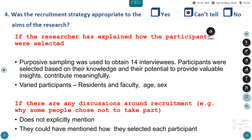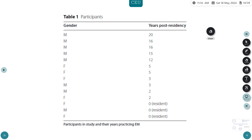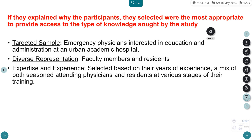There were more males than females, with participants ranging from residents to faculty at various years post-residency. The targeted sample was emergency physicians at a tertiary care academic center interested in education and administration at an urban hospital, representing a diverse mix. They had different expertise levels, from first-year residents to seasoned attending physicians with 20 or more years of experience. If they explain why the participants selected were most appropriate to provide the type of knowledge sought, that justifies the sample.